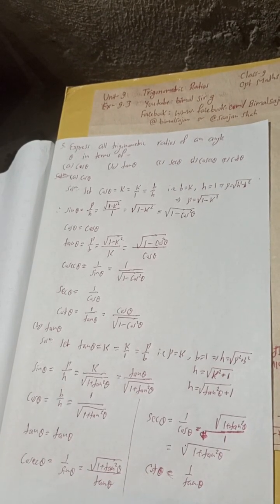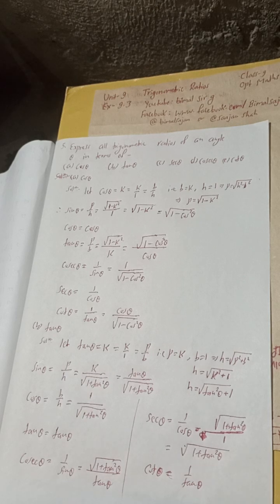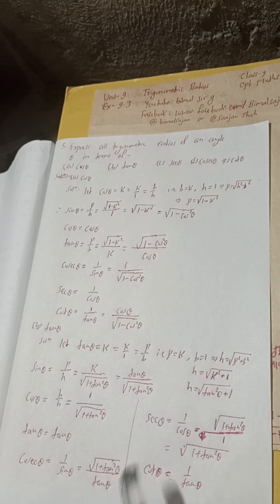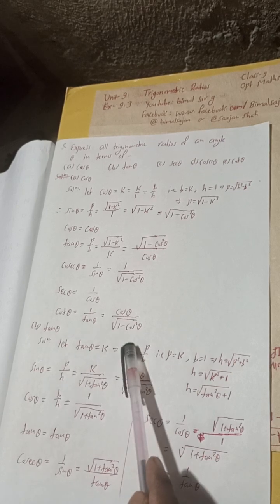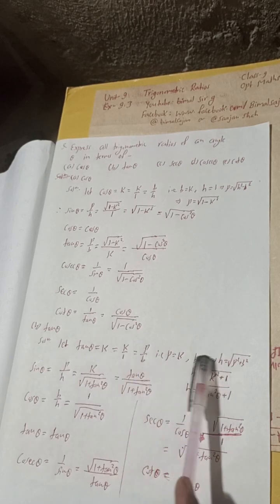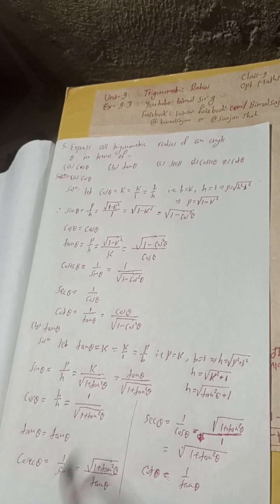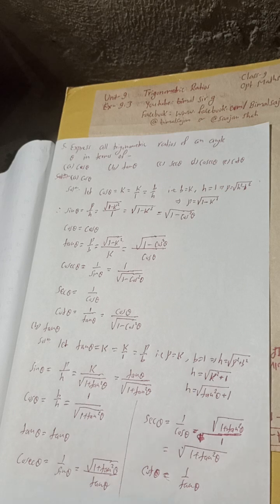This is the complete solution up to part B. For parts C, D, and E, you can solve using the same trick — for example, let sec theta = k and use the formula b/h, then find the remaining ratios. I am not going to solve all remaining parts; you can solve them the same way. See you in the next videos — keep watching, keep supporting, give your sweet comments. Radhe Radhe, Jaya Shri Krishna.